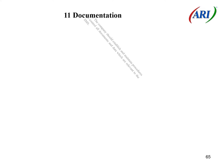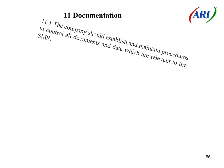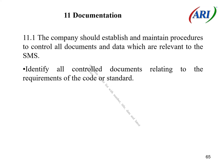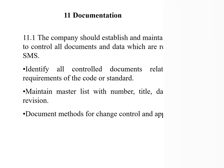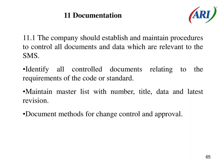Section 11: Documentation. 11.1 The company should establish and maintain procedures to control all documents and data which are relevant to the SMS. Identify all controlled documents relating to the requirements of the code or standard. Maintain a master list with number, title, date and latest revision. Document methods for change control and approval.